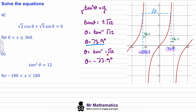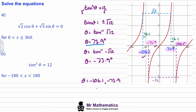Now looking at when tan theta equals negative root 12, theta is negative 73.9. There will be another solution when theta is positive. The difference of 16.1 is the same on this side, so this corresponds to theta equals 106.1 degrees. So our final four solutions are theta equals negative 106.1, negative 73.9, 73.9, and 106.1 degrees.